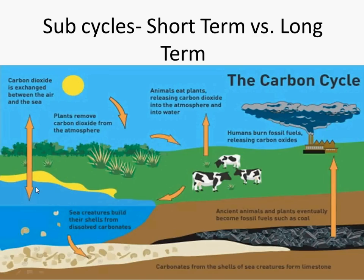This exchange between the air and the ocean gets carbon dioxide into the ocean, where sea creatures build their shells from the dissolved carbonates that end up in the water from the atmosphere. As these shelled organisms die, they lie on the ground as a substrate in the ocean, and they get compressed and compacted over a very vast and long period of time, where these ancient animals and plants become fossil fuels. One of the fossil fuels that we burn often is coal, especially in the United States. As humans go ahead and burn these fossil fuels, these carbon oxides are released into the atmosphere.